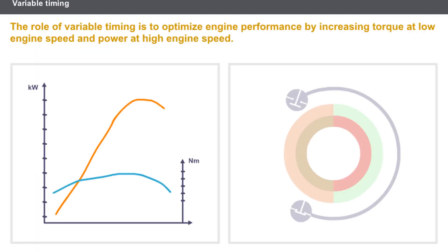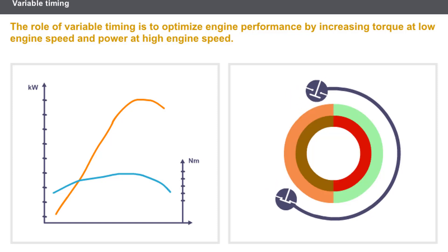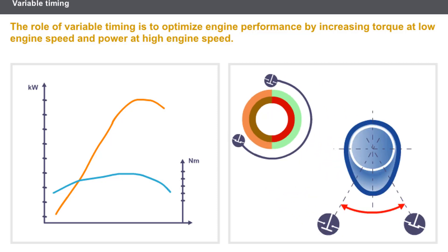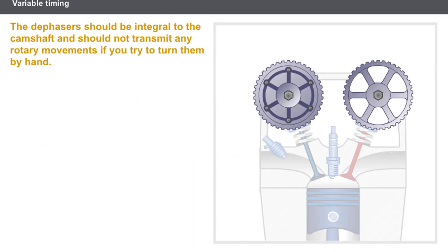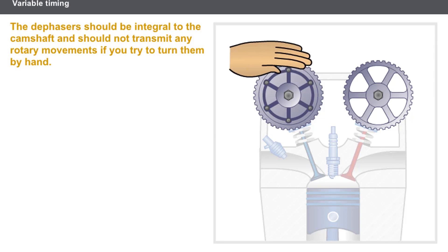The role of variable valve timing is to optimise engine performance by increasing torque at low engine speed and power at high engine speed. The principle is to vary the point at which the inlet valves open and close using a camshaft dephasor. To obtain maximum power, the angle between the opening and closure of the inlet valve must be as great as possible. When replacing the timing belt, the condition of the dephasors must be checked. The dephasors must be integral to the camshaft and should not transmit any rotary movements if you try to turn them by hand.